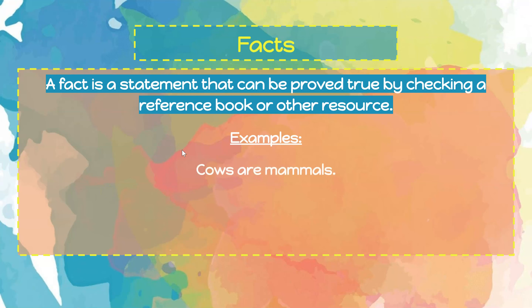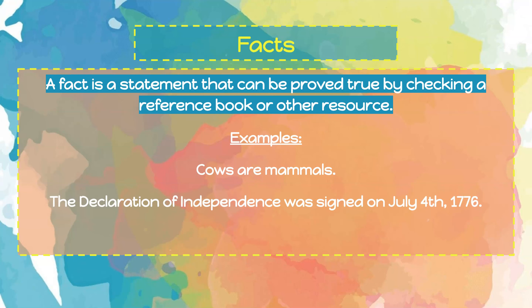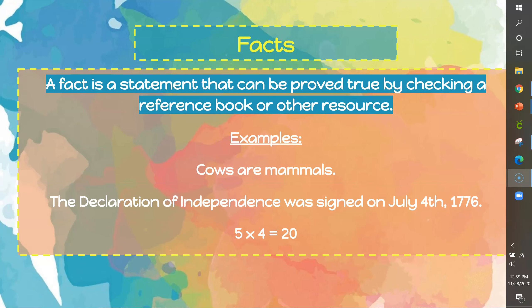Cows are mammals. We know that mammals are any warm-blooded creature that has fur, and it's easy to prove that a cow is warm-blooded and has fur. The Declaration of Independence was signed on July 4, 1776 — we can prove this by checking the document or history textbooks. Five times four equals 20, and you could show five equal groups of four items to prove it. These examples can all be proven true. That is how we know they are facts.